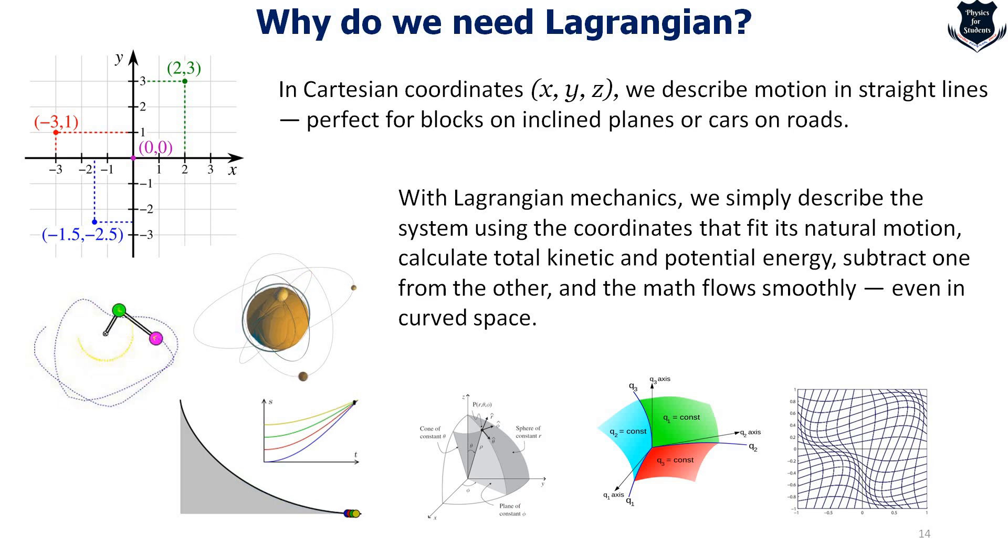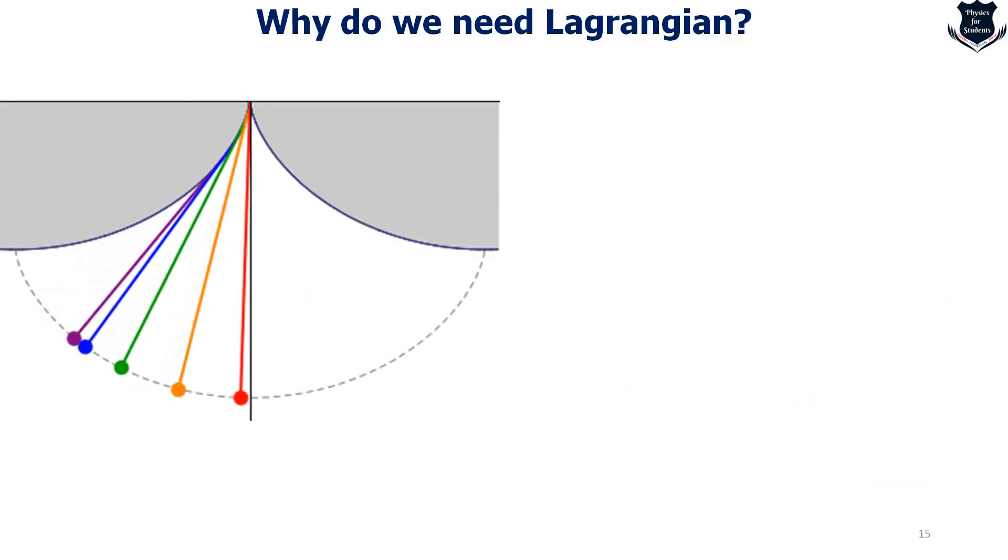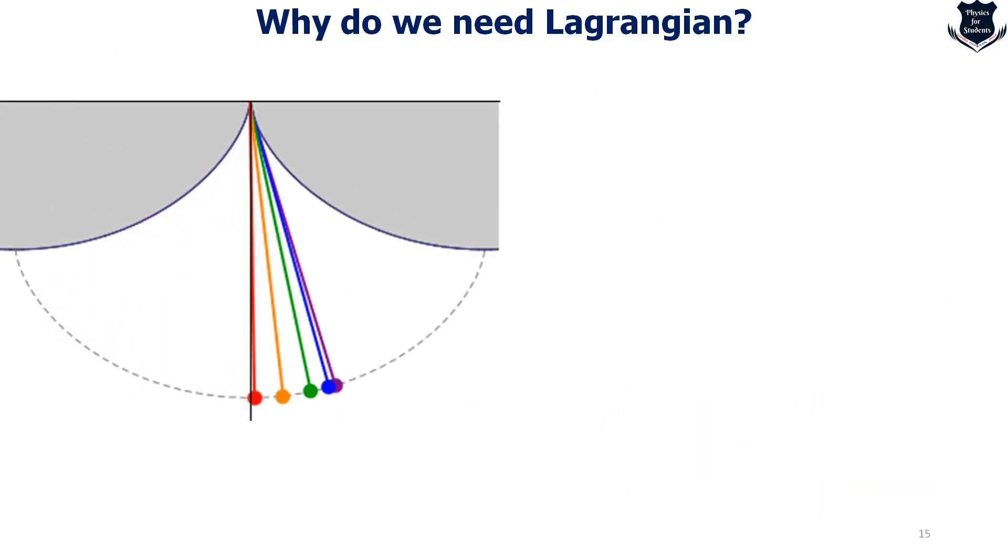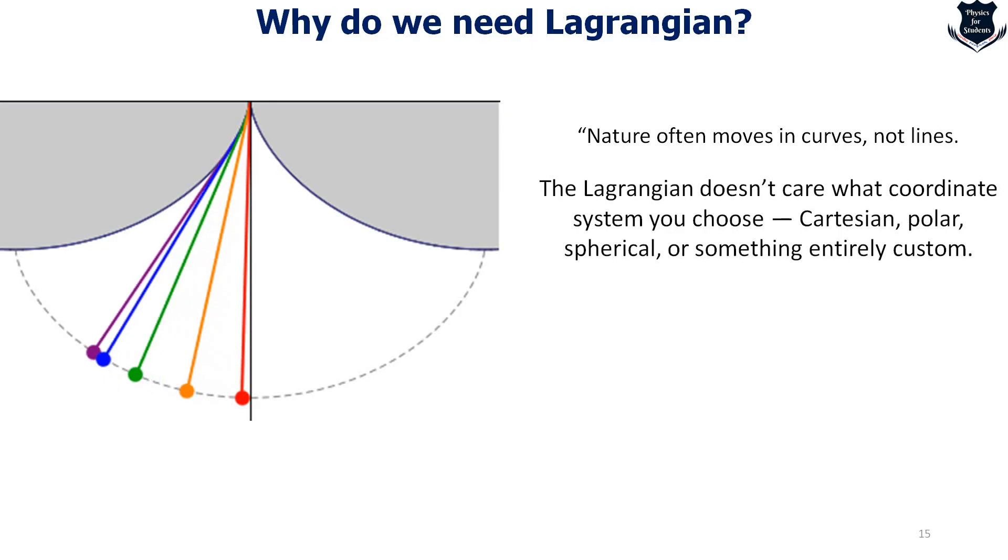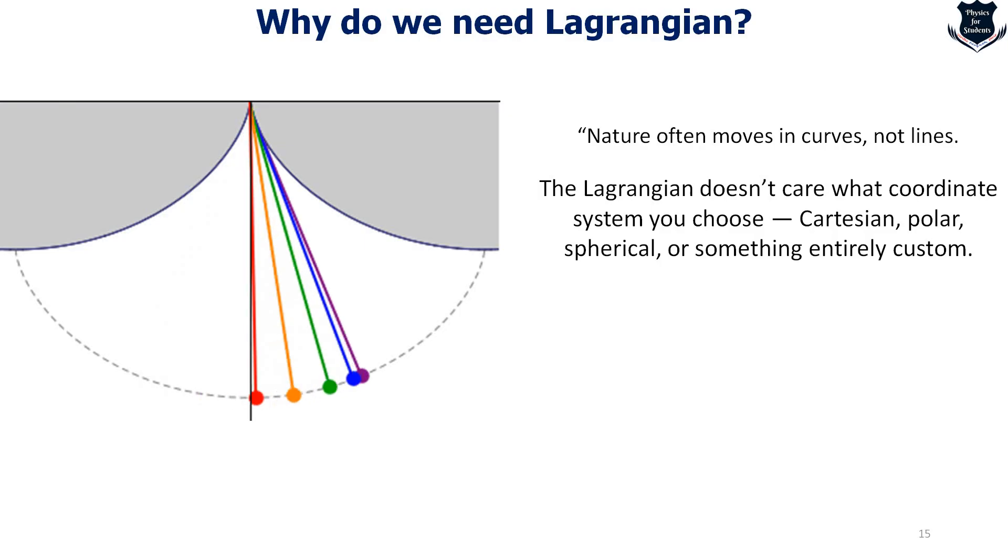This is something very elegant. Nature actually won't follow a simple possible path. It would be complex, swirling, twisting etc., and that is where the Lagrangian mechanics come in play. As you can see over here, this is a kind of a curvilinear path. Nature often moves in curves, not in straight lines. The Lagrangian doesn't care when you use it. It gives you generalized coordinates, much more elegant.